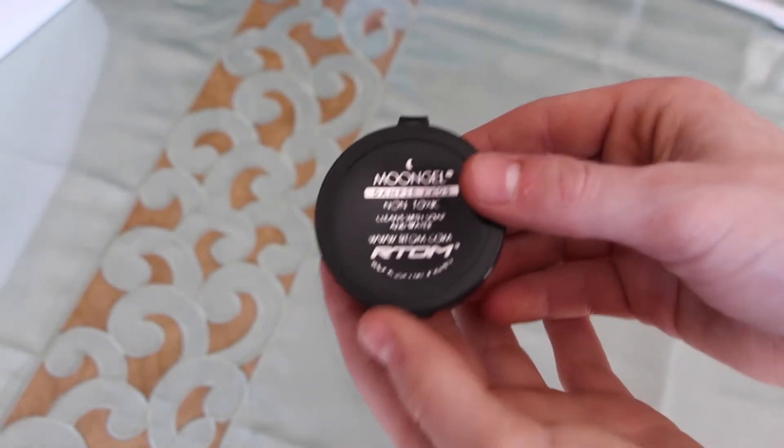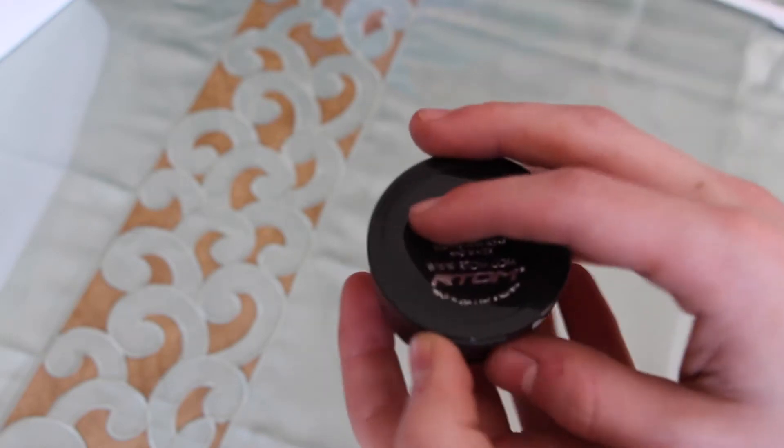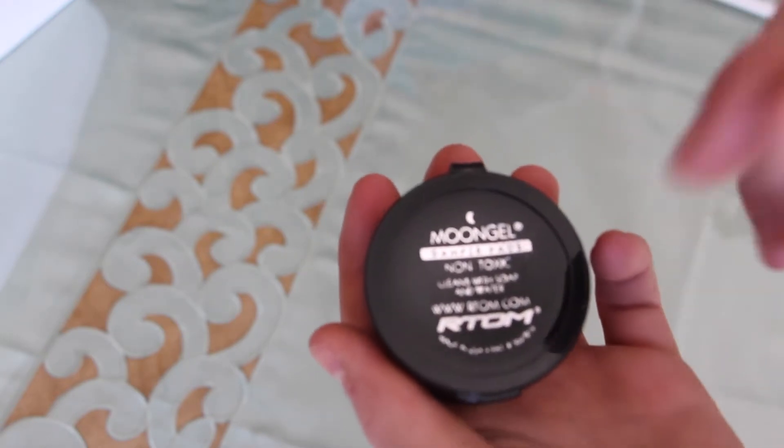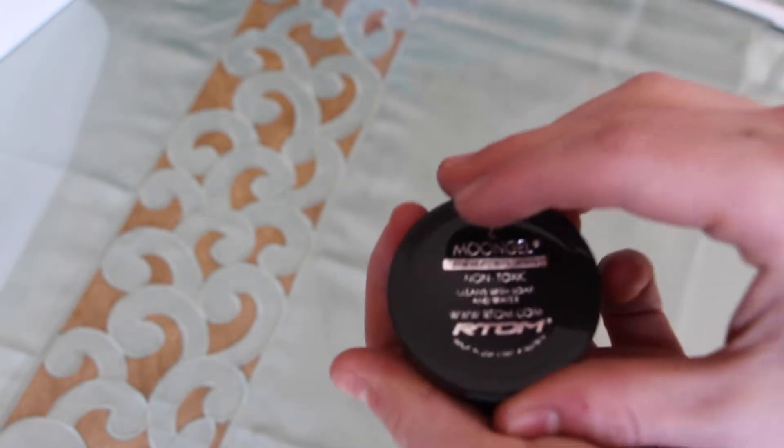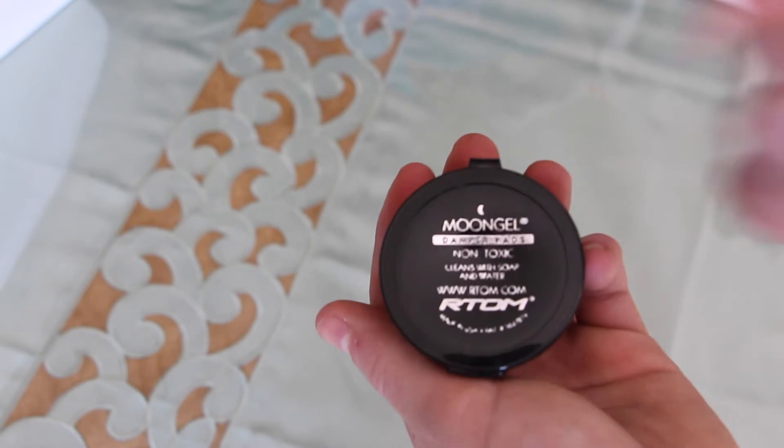Alright, so what you're going to want to buy is this thing called Moon Gel. It's for drummers, but this is a really good way. If you learned how to do this on this article, it'll be in the bio. Just look at that and it'll show you where to get this or how this works. I'll put a link also where to get this. I got this on Amazon for like 7-8 bucks.